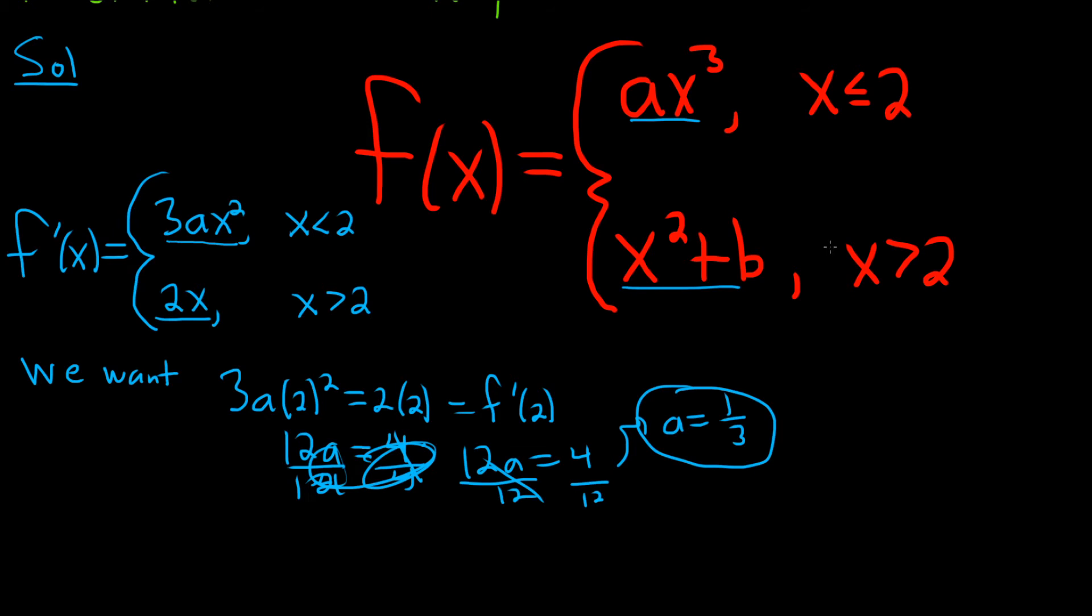So in order for it to be continuous at 2, the limit must exist. That means the one-sided limits must be the same. Let's take the limit from the left as x approaches 2. Now we're going to use continuity. When you're approaching from the left, x is less than 2, so you use the top piece. And this is a continuous function on its own, so you can plug in 2. So we get 8a.